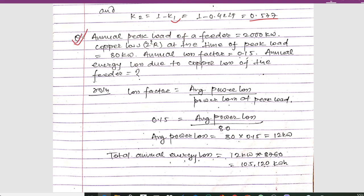The annual peak load of a feeder is given as 2000 kilowatt. The copper loss (I²R) at the time of peak load is 80 kilowatt, and the annual loss factor is given as 0.15. We have to determine the annual energy loss due to copper loss of the feeder. Loss factor = average power loss / power loss at peak load.